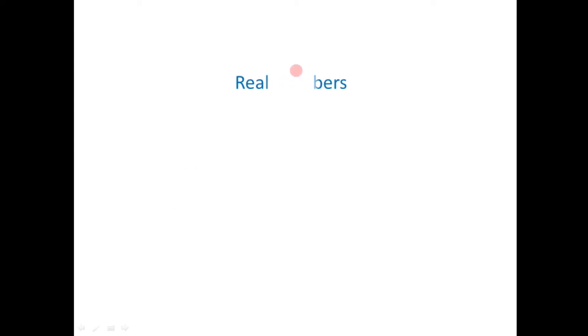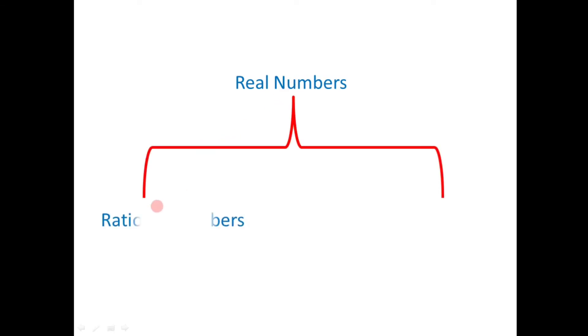Our main topic today is real numbers. Real numbers are classified into two main categories: rational numbers and irrational numbers. We are going to learn these two types of numbers in detail.